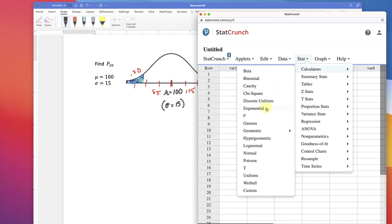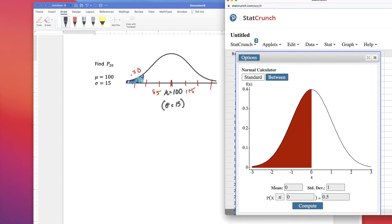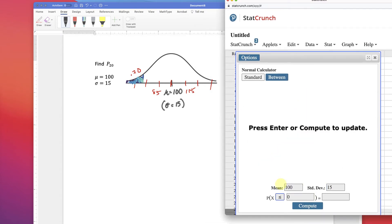Stat, calculator, normal, and we just put in our information. A mean of 100, standard deviation of 15, and then we want that left tail to be 20%. So we want to know what this one is, so we put the 20% in the area, right?